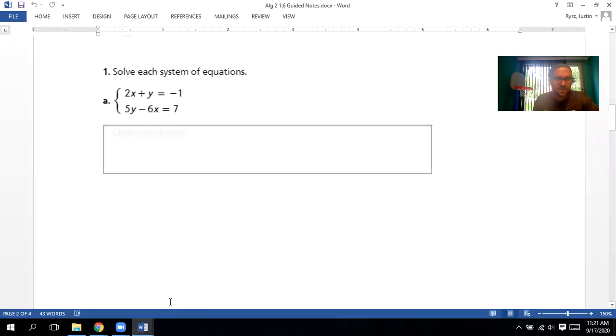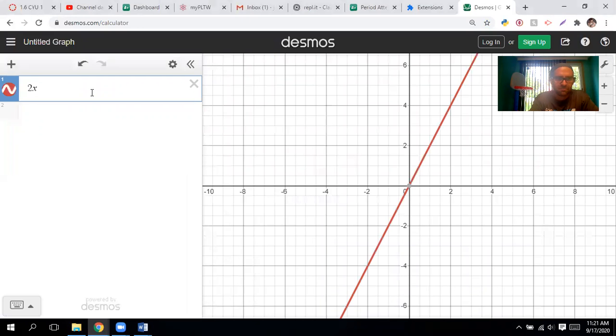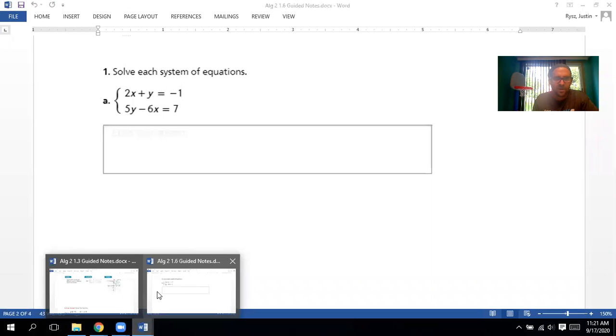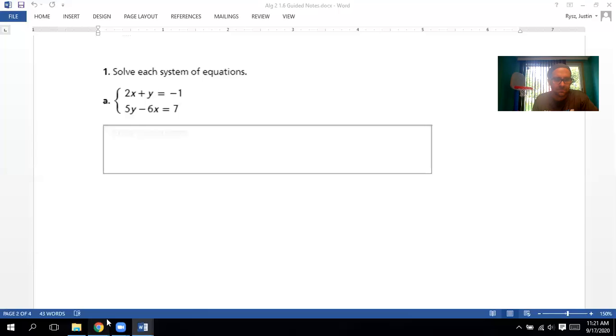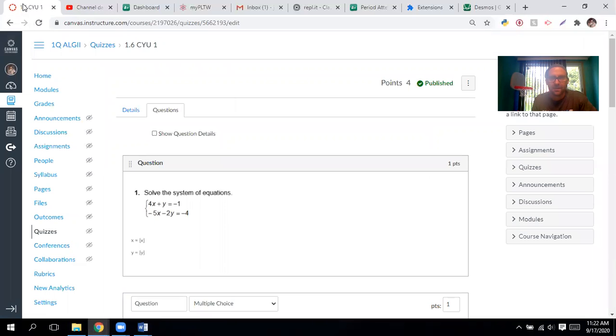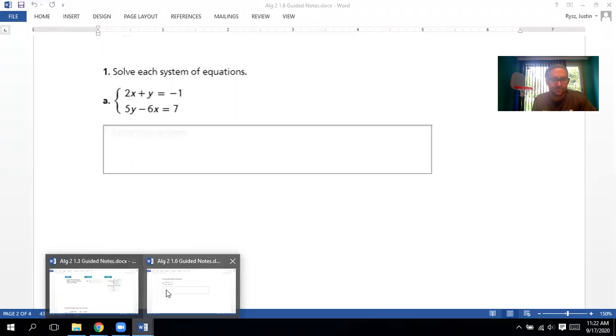We're going to type in the equations that we have. Now I'm going to use the original equations in case I made a mistake. Two x plus y equals negative one. And then the other equation was five y minus six x equals seven. Negative point seven five, so that's negative three quarters and one half. That's where the two lines crossed. So that's our goal: finding the values that work for both of them.